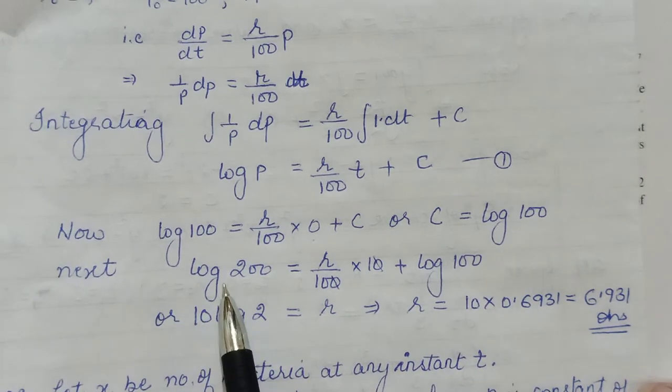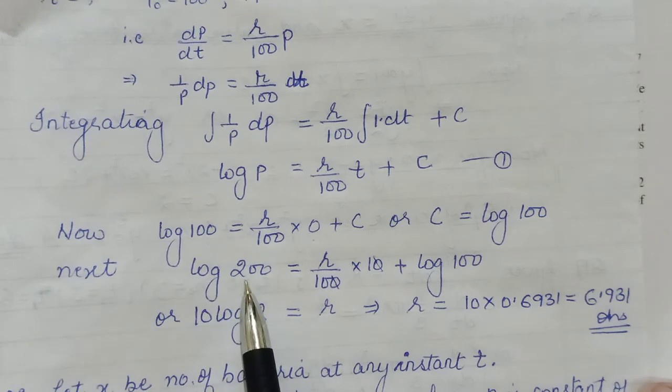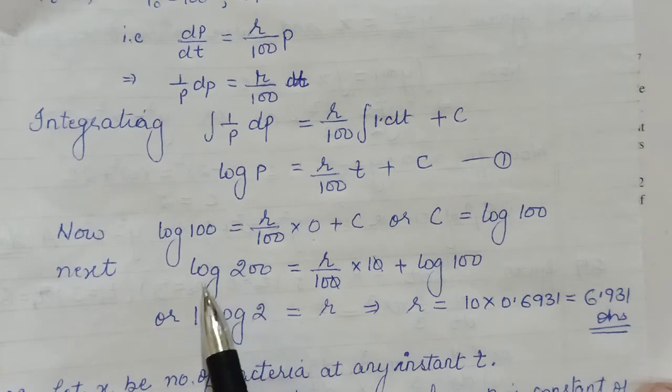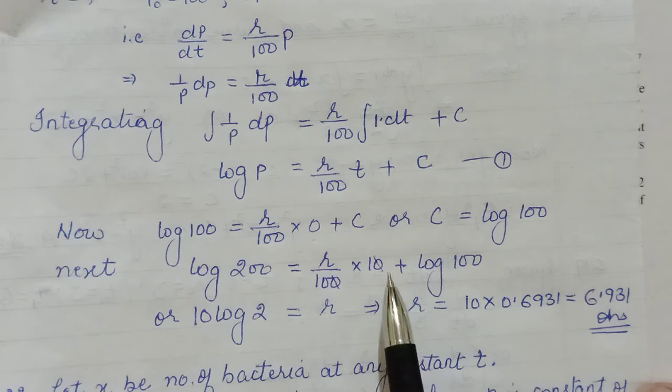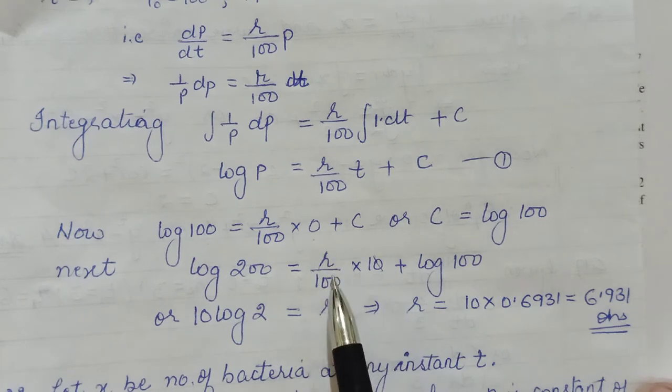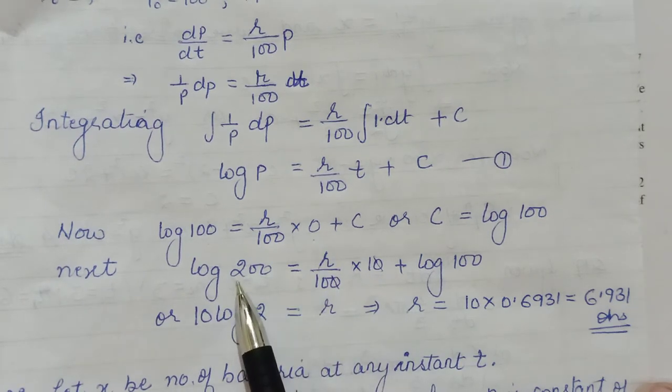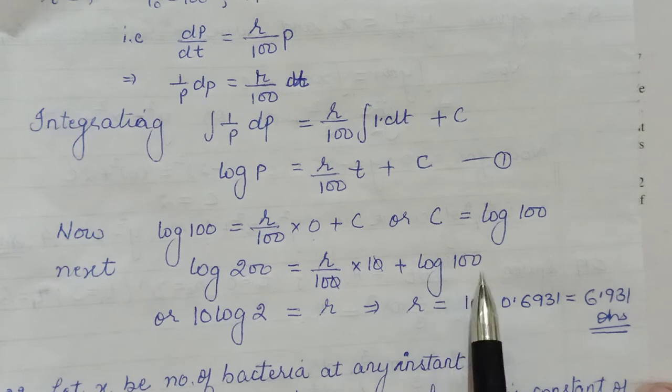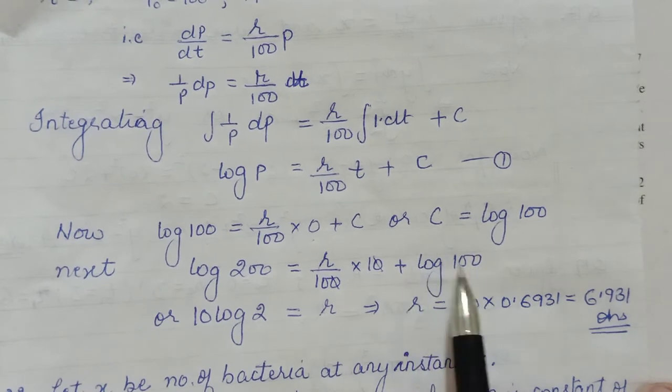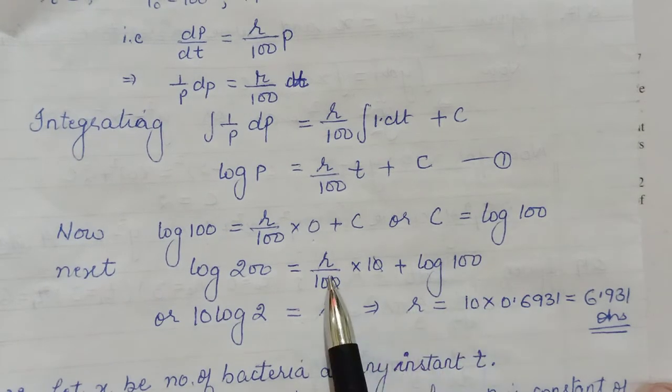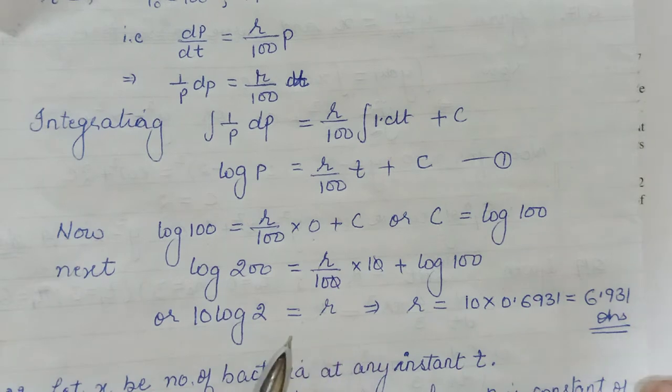Okay, in the second go, when doubling means now it will become 200. If principal is 200, that happens after 10 years. So now you put your T as 10, P as 200, and C came out to be log 100. Put that value as well to find R from here.